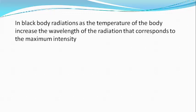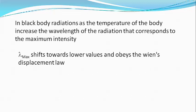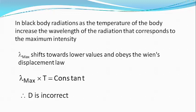We know that in blackbody radiation, as the temperature of the body is increased, the wavelength corresponding to the maximum intensity shifts towards lower wavelengths, obeying Wien's displacement law: lambda max into T equals constant. The higher the temperature, the lower the value of lambda max. Hence option D is not correct.